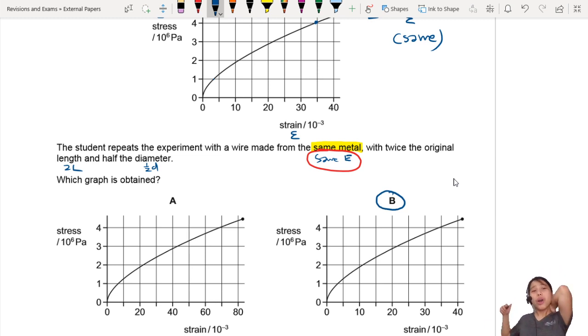Now you're wondering, but miss, what about twice the length and half the diameter? Yeah, those are changing, those are variables that are changing, but at the end of the day, the ratio is still the same.